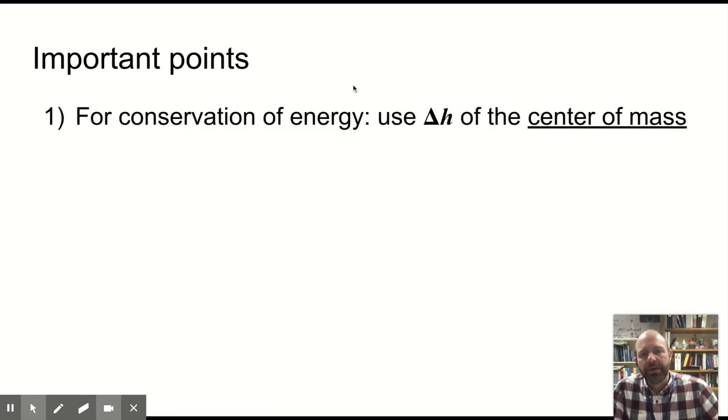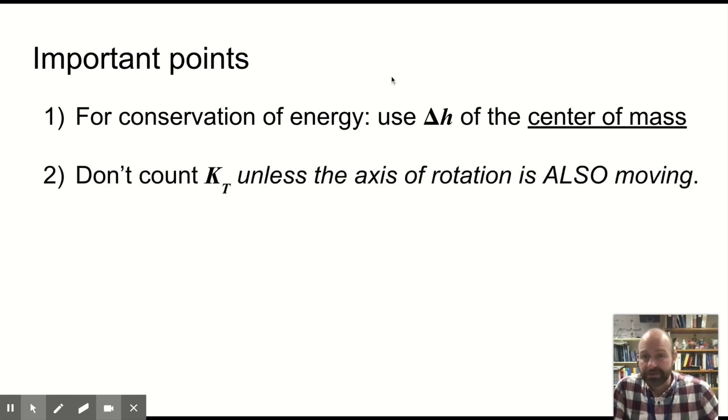All right, so what are the big ideas here? When we're doing conservation of energy here, you have to watch out. The center of mass moving is what matters for calculating gravitational potential energy. Don't count translational kinetic energy unless both the axis is moving and it is rotating. In these cases, it's just pure rotation.